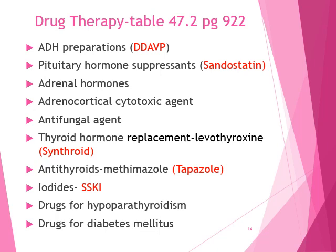On page 922 is the drug therapy table. The first one I want you to look at is the ADH preparations — DDAVP, which is desmopressin. Notice it says 'pressin.' It's a nasal spray that can also be given parenterally or orally. It treats diabetes insipidus. Know that DDAVP desmopressin nasal spray is for ADH — antidiuretic.